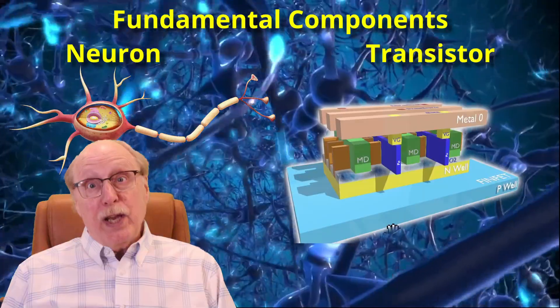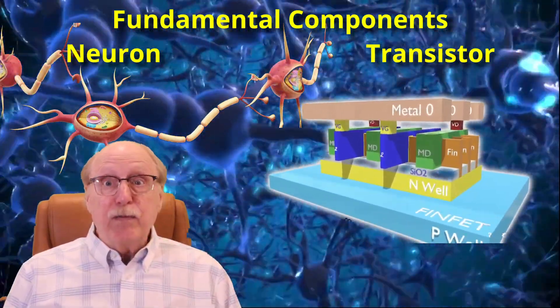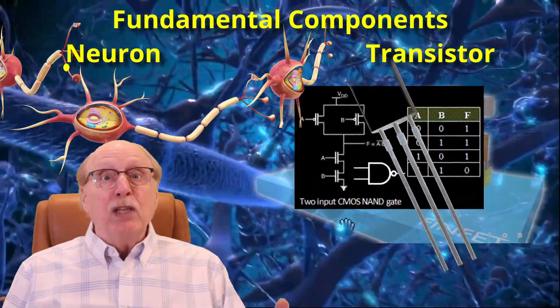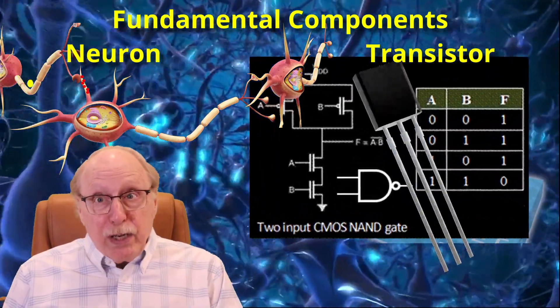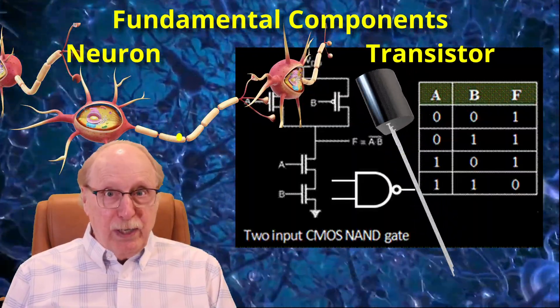Both computers and brains have evolved around the capabilities and limitations of their fundamental components, so it is key to understanding brains and AI to know at least the basics of transistors and neurons.